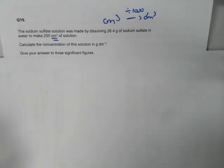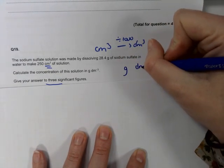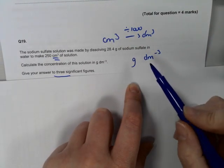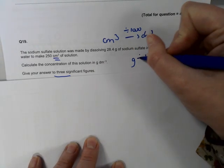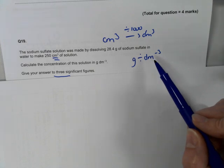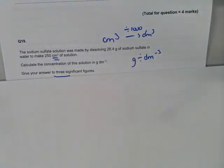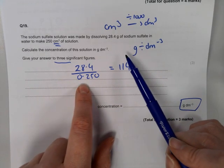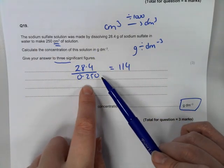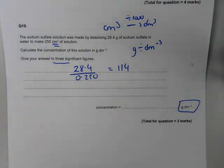Last one for combined students — concentration — and these are nice and straightforward. You're given grams and centimetres cubed, and your answer will be in g dm⁻³. The unit tells you what to do: grams divided by decimetres cubed. Convert cm³ to dm³ by dividing by 1,000: 250 ÷ 1,000 = 0.25 dm³. Then 28.4 ÷ 0.25 = 114. The answer to three significant figures is 114 g dm⁻³.